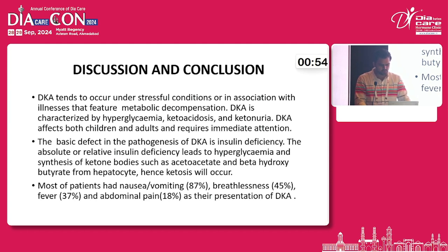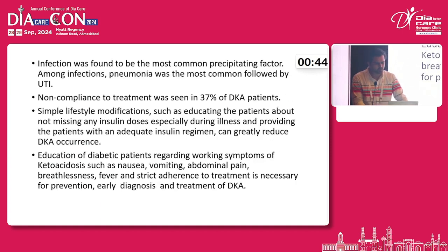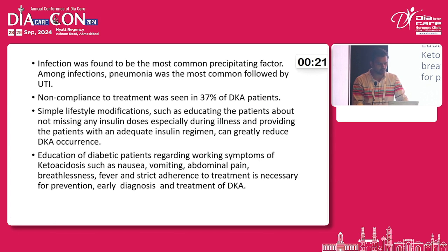Most patients had nausea and vomiting (87%), breathlessness (45%), fever (37%), and abdominal pain (18%) as presentations of DKA. Infection was found to be a common precipitating factor; among infections, pneumonia was most common followed by UTI. Non-compliance to treatment was seen in 37% of DKA patients. Simple lifestyle modifications such as educating patients about not missing insulin doses, especially during illnesses, and providing adequate insulin regimens can greatly reduce DKA occurrence. Education of diabetic patients regarding warning symptoms of ketoacidosis — such as nausea, vomiting, abdominal pain, breathlessness, and fever — and strict adherence to treatment is necessary.